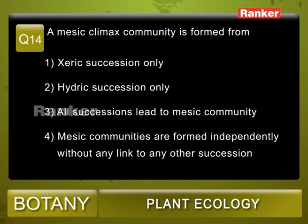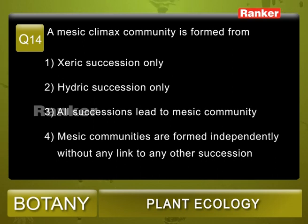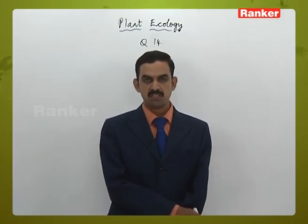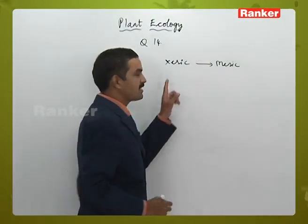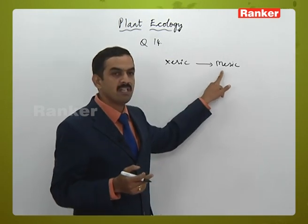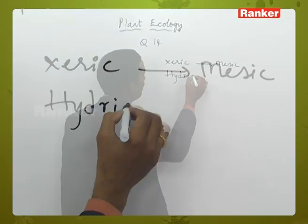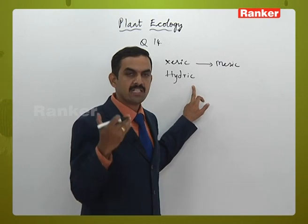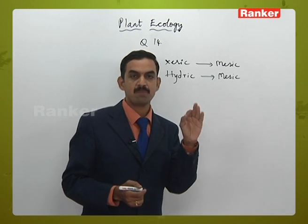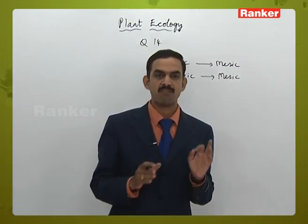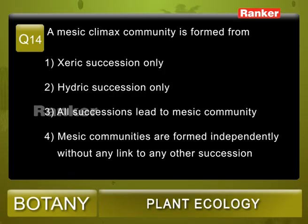Question 14: A mesic climax community is formed from: 1) xeric succession only, 2) hydric succession only, 3) all successions leading to mesic community, 4) mesic communities formed independently. Xeric conditions convert xerophytic land into mesophytic area; hydric succession starting in a water body also converts into terrestrial mesic land. Both xeric and hydric successions ultimately lead to mesic conditions. Correct answer: 3.